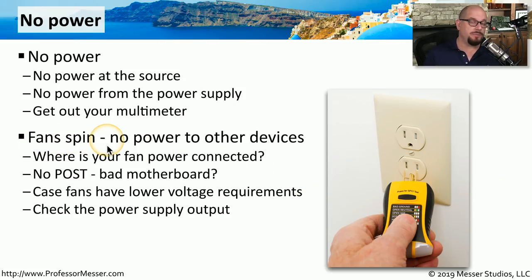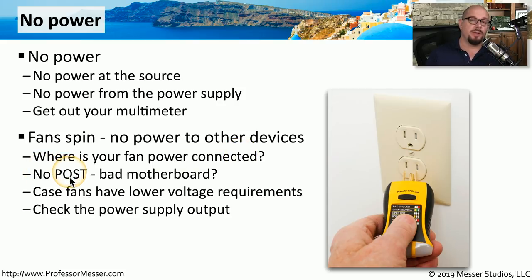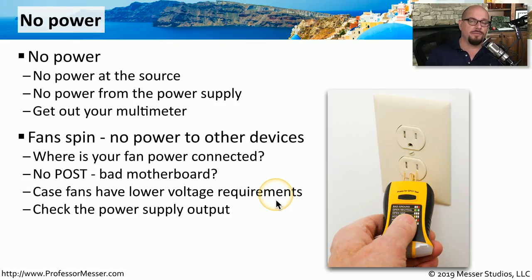For example, your fans might be spinning, but the entire system is not booting up. You can sometimes connect fans directly to the power supply, or you may be connecting them to a fan controller on your motherboard. If your fans are connected to the power supply and they're starting up, that might indicate that at least some part of the power supply is working. If you're getting no Power On Self Test to your motherboard, the issue still could be power supply related, or it might be related to a bad motherboard. If the problem is related to the power supply, we might be seeing lower voltages coming off of the power supply, which are enough to turn the fans but not start the motherboard. The best way to check is to get your multimeter or a power supply tester, and check all of the different voltages coming from that power supply.